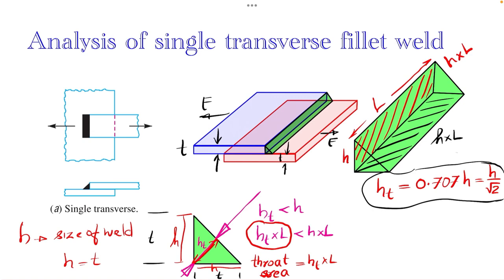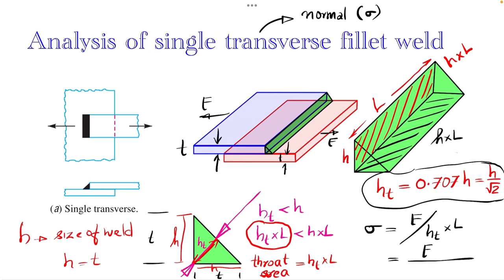We have a relation: ht = 0.707 × h, which is h/√2. This is also given in design data books. In a transverse fillet weld, normal stress σ is produced. The normal stress is σ = F / (throat area) = F / (ht × l) = F / (0.707 × h × l), which simplifies to σ = 1.414 × F / (h × l). This is the analysis of a single transverse fillet weld, relating the applied load F, the weld size h, and the allowable strength.